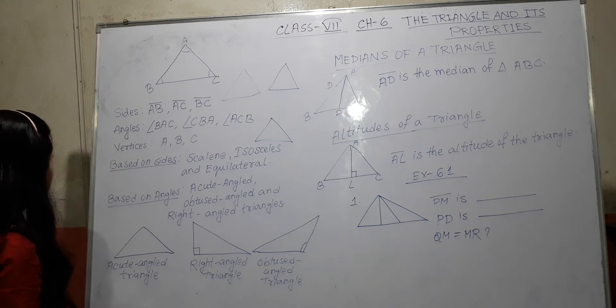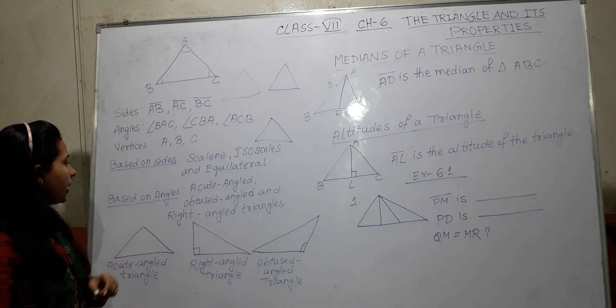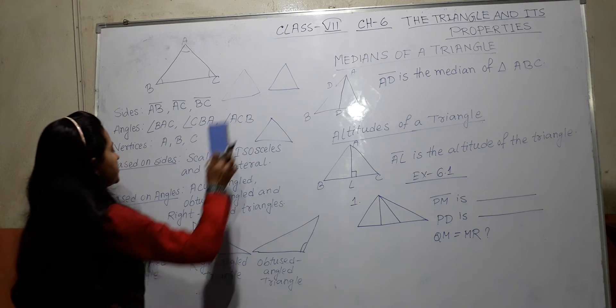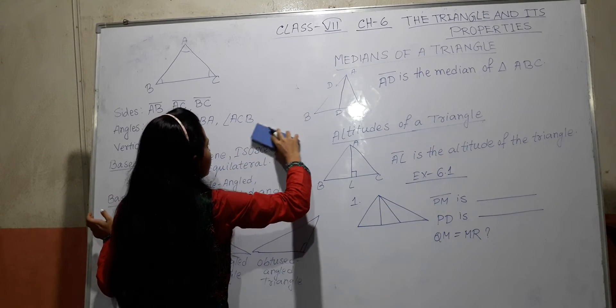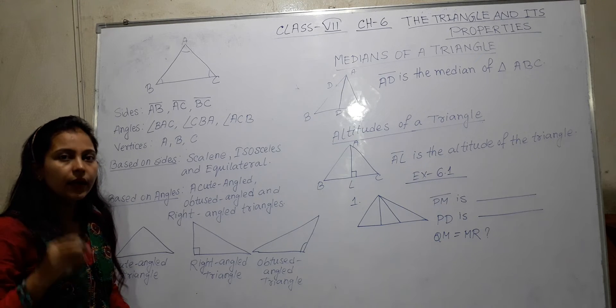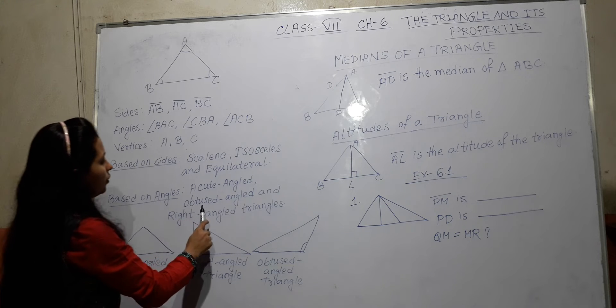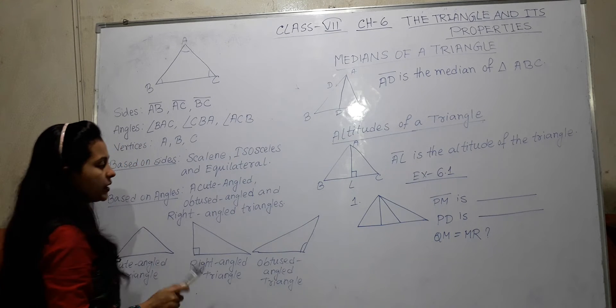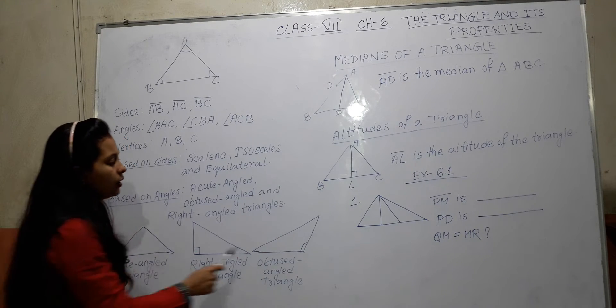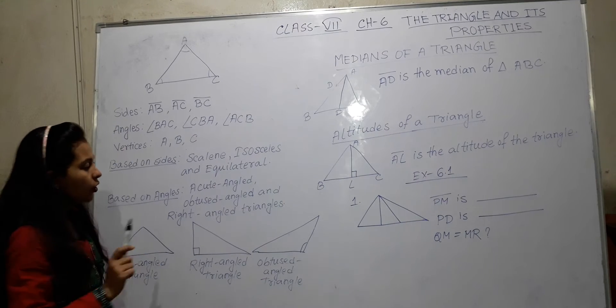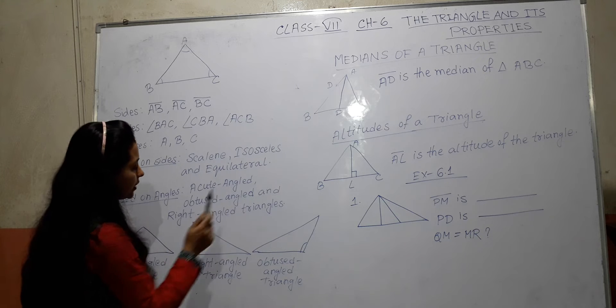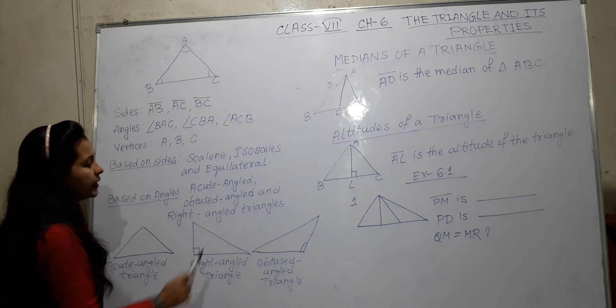We already know that. And second is based on angles. We can divide triangle in 3 types. Acute angle triangle means whose angles are acute angles. Acute angle means less than 90 degree angle. Obtuse angle means whose angle is at least one angle, one angle is obtuse angle. Obtuse angle means more than 90 degree.